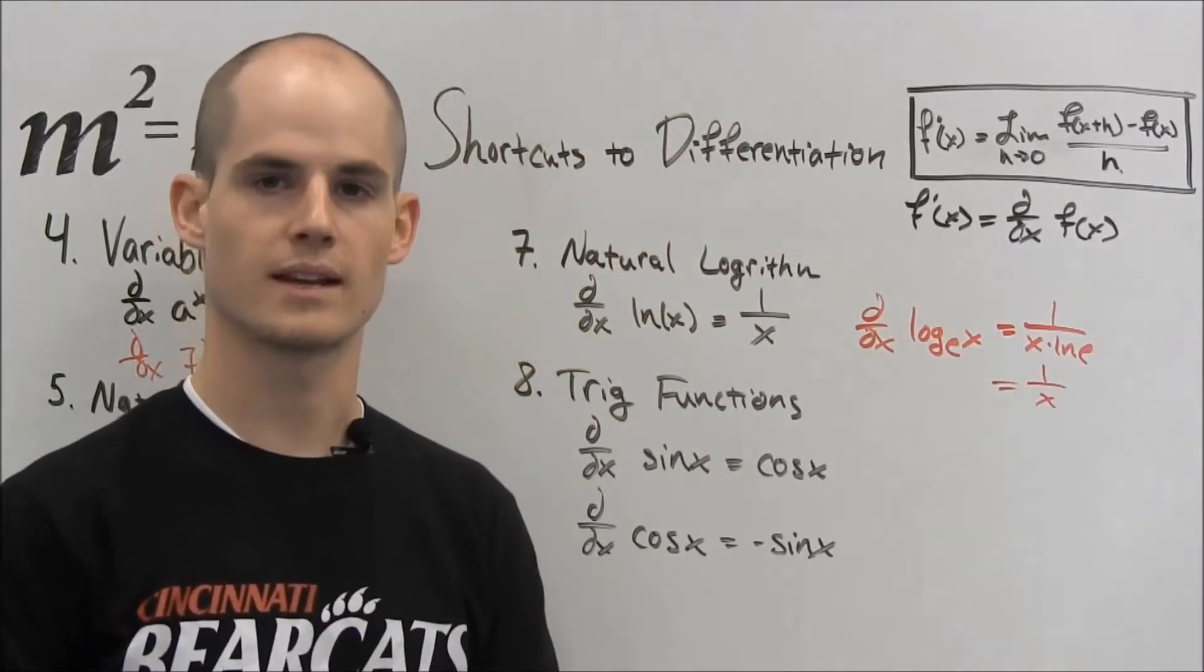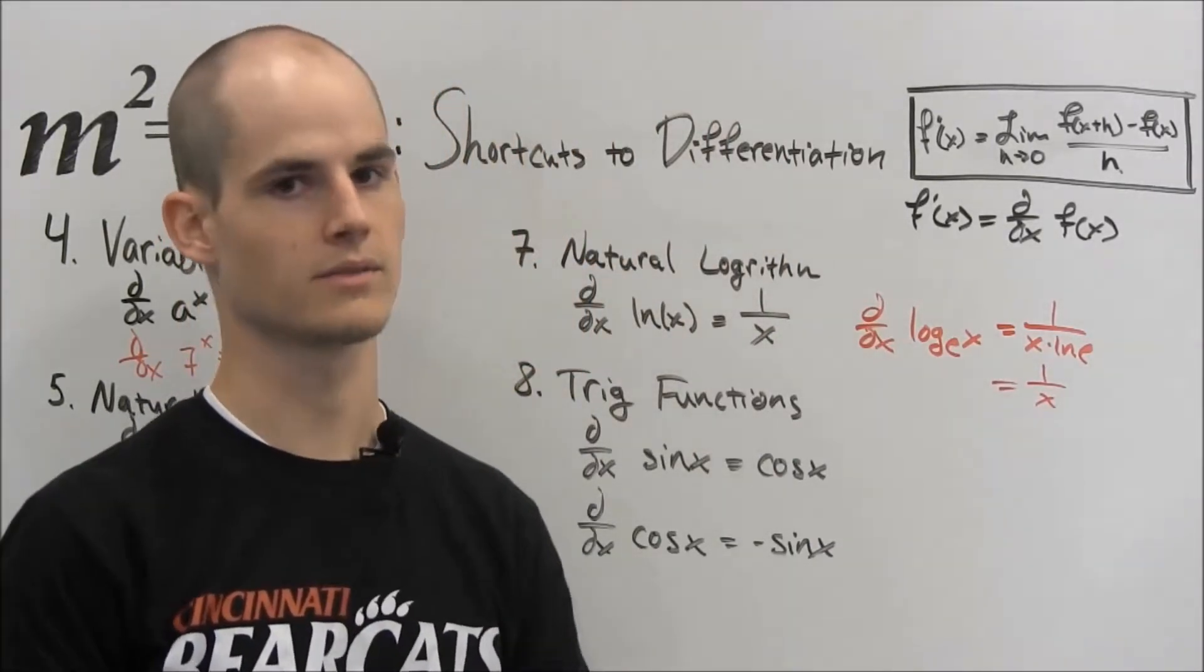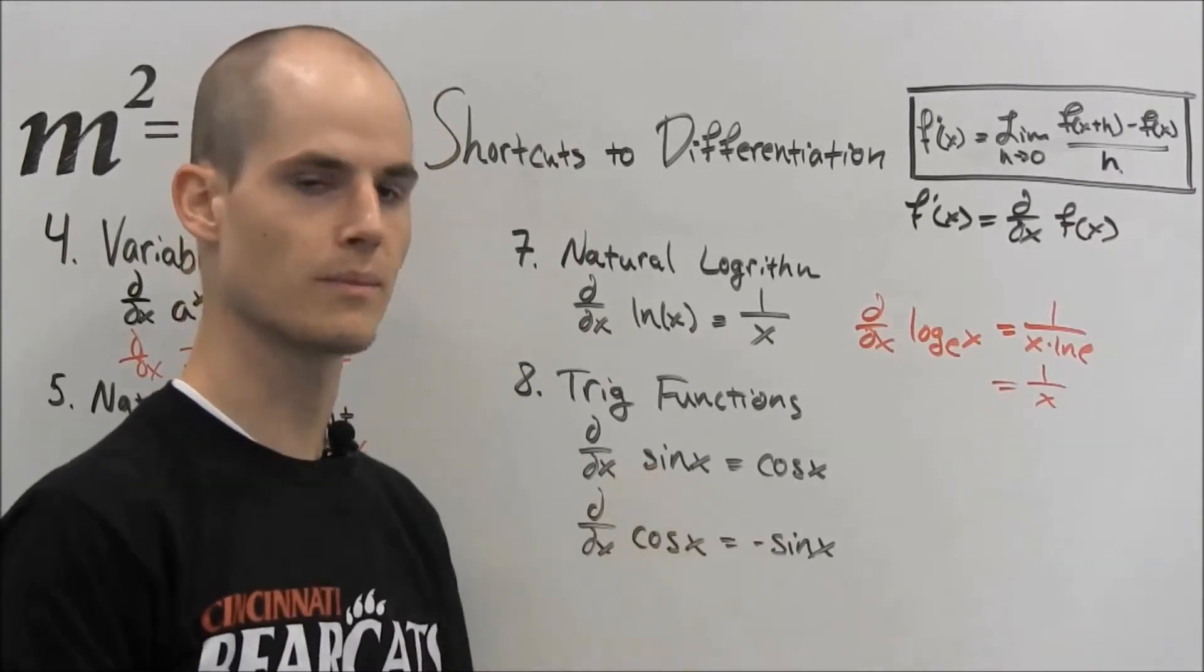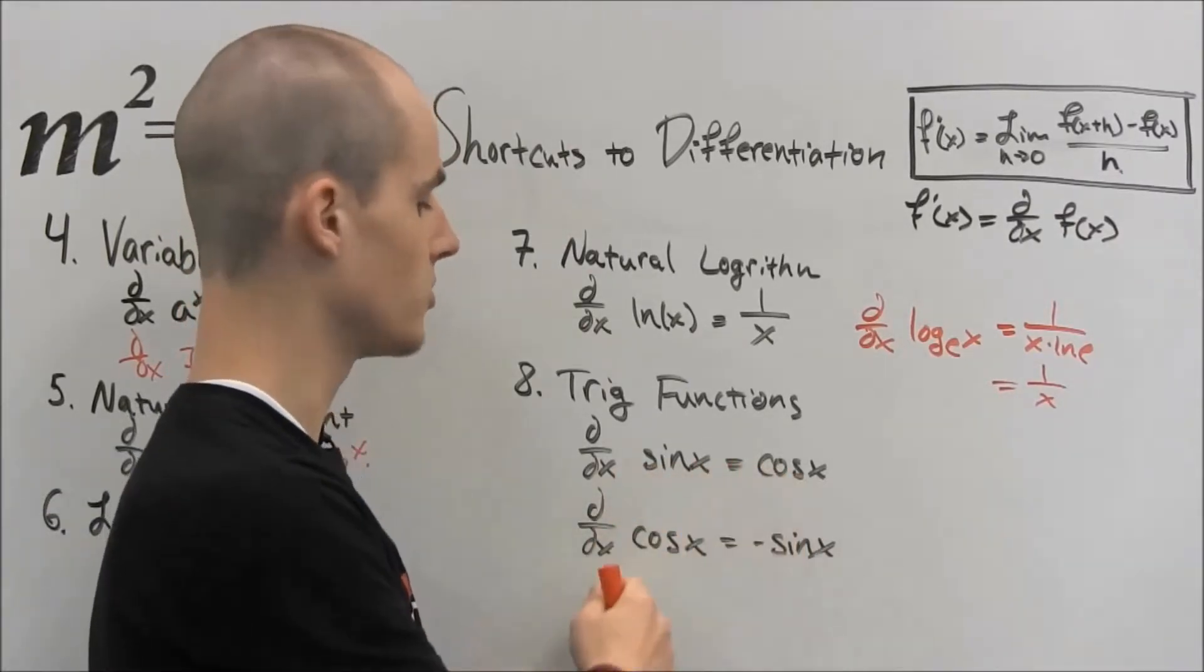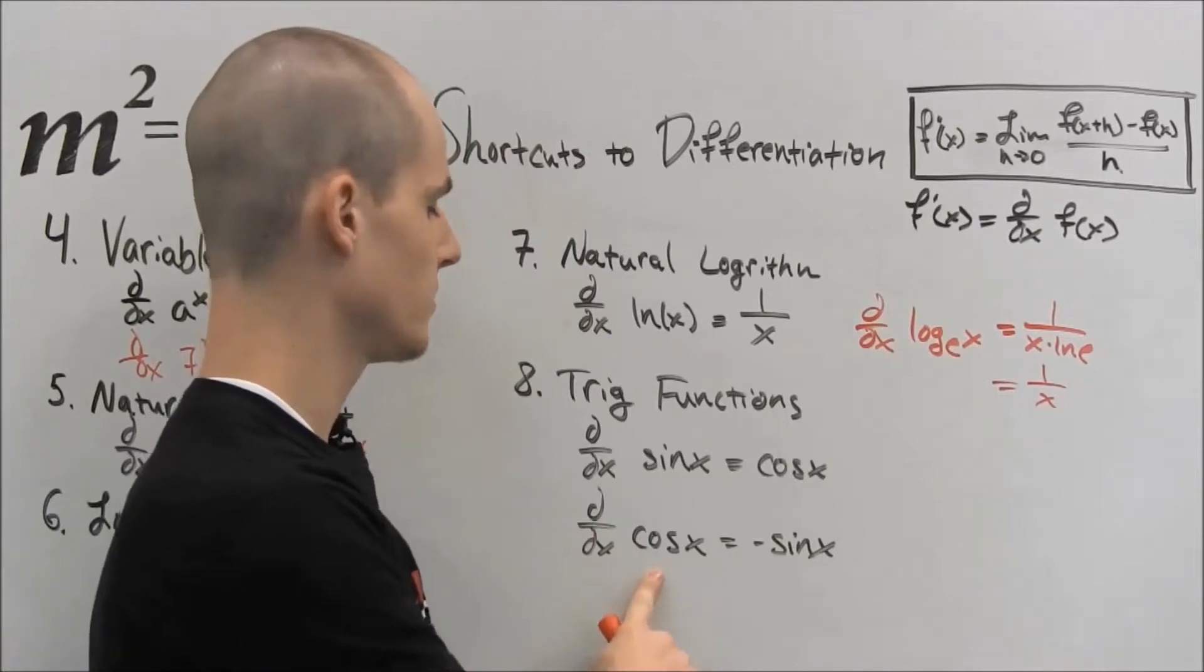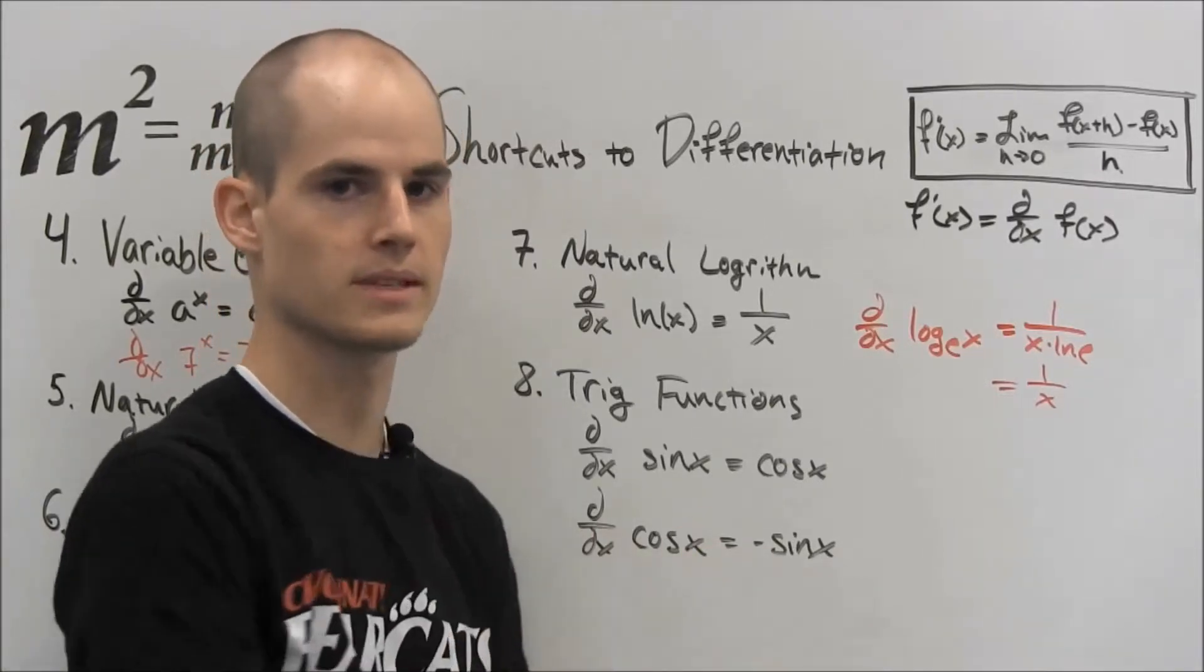So the last one is trig functions, and I'm assuming there's a lot of you out there like me who are kind of afraid of trig. But just remember that sine goes to cosine, cosine goes to sine. But the second part, when cosine goes to sine, it becomes negative.